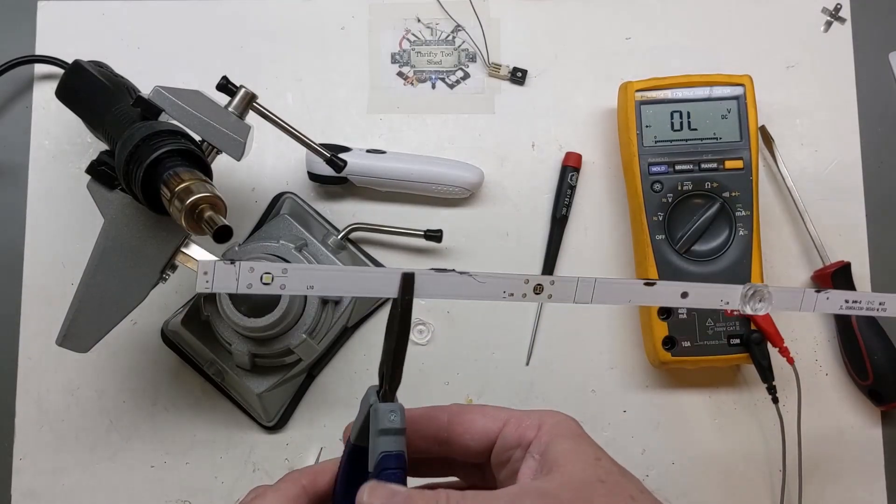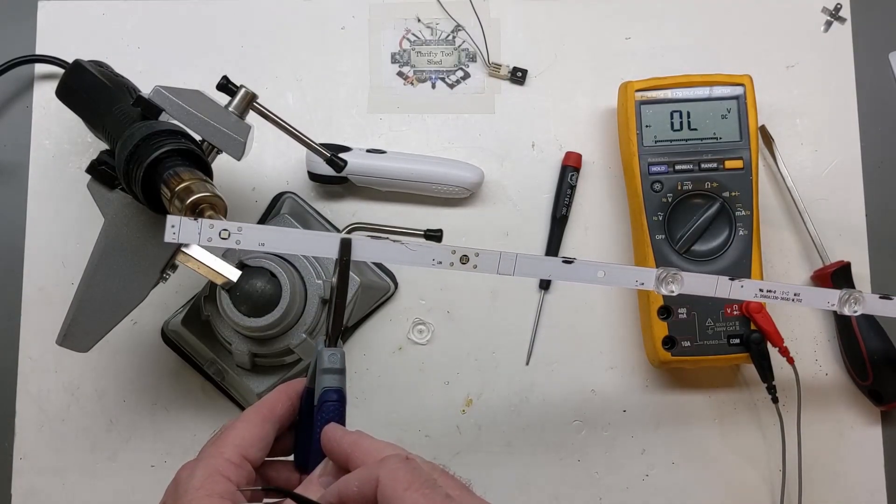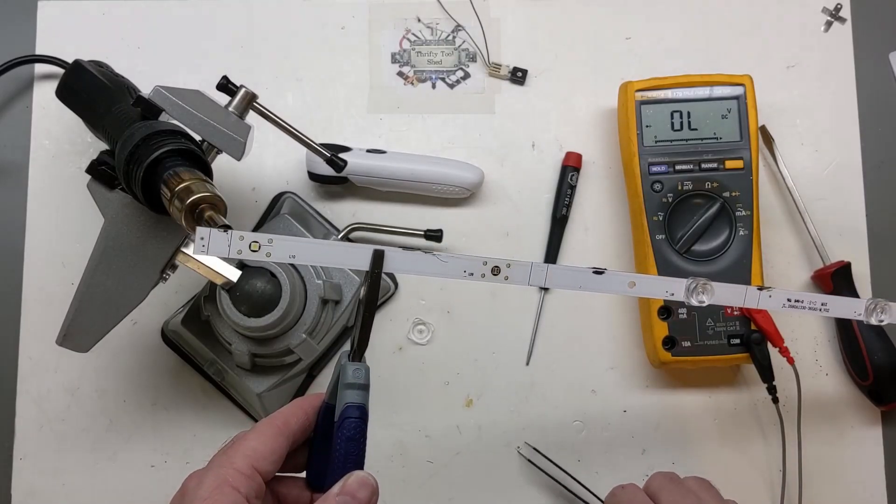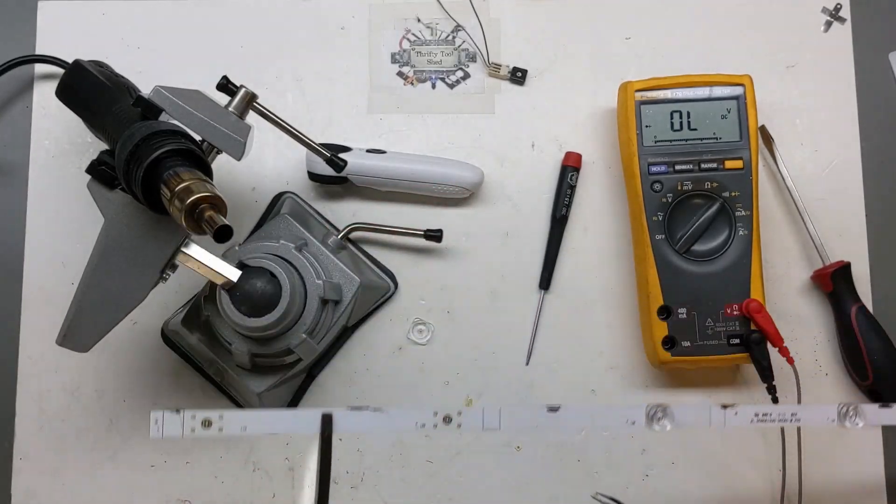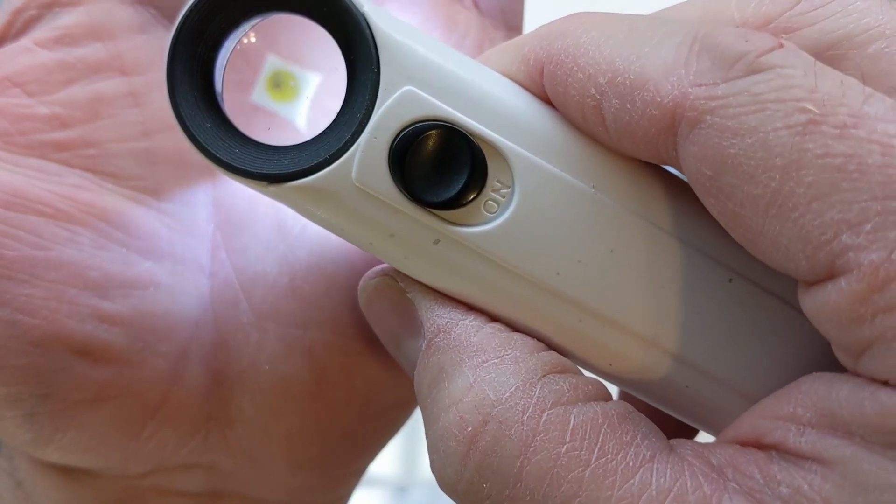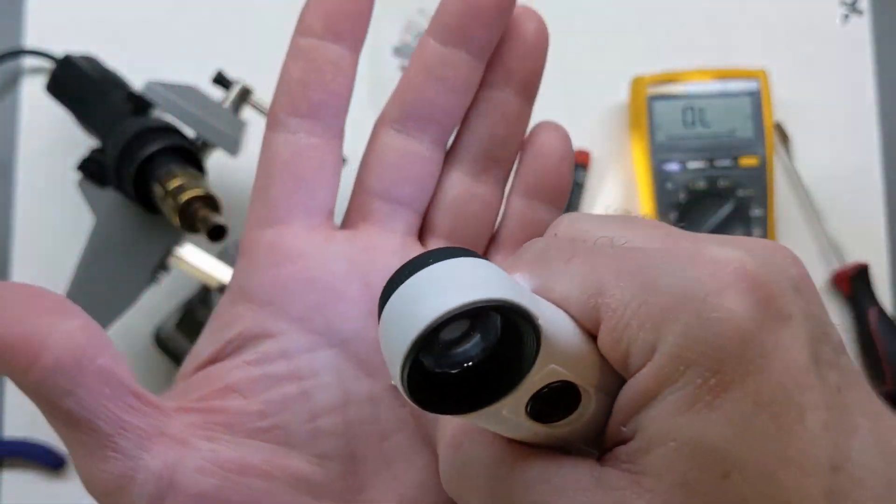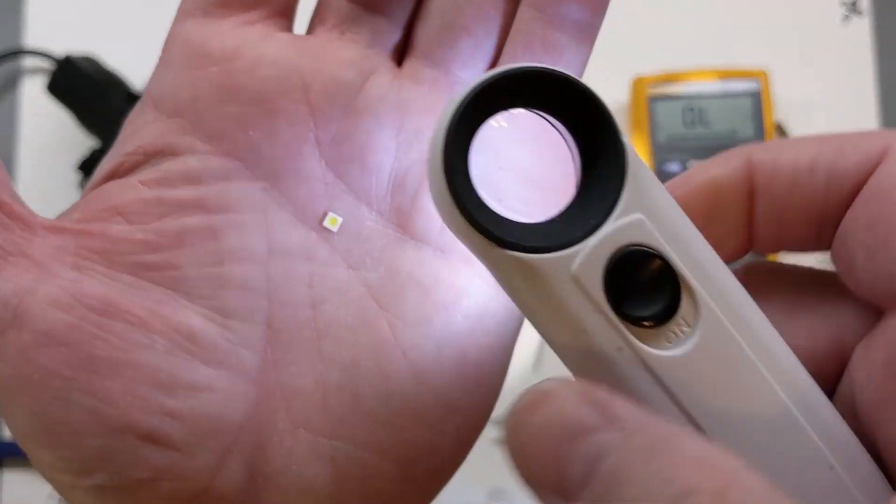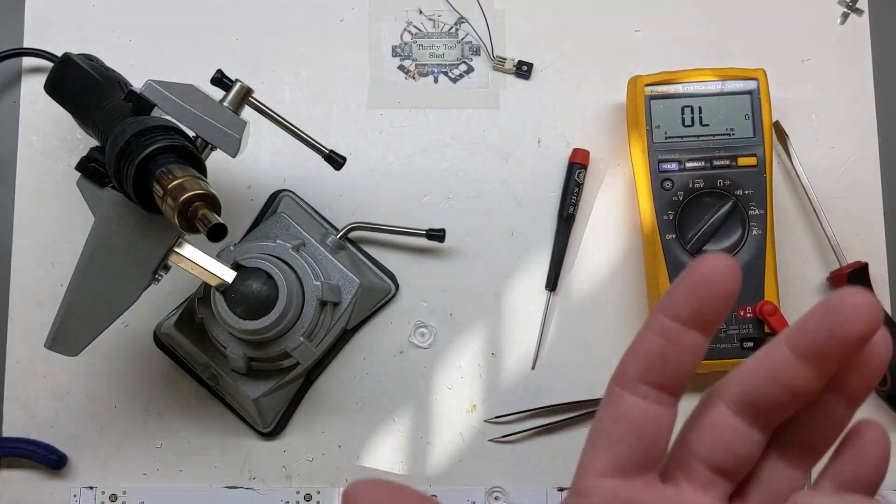Just that easy. I'm going to go ahead and remove number 10 while I'm at it because it showed a 0.6 forward voltage and that is incorrect. There we go. And this is that bad one. It definitely had a dark spot in it.